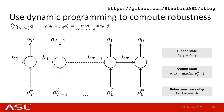We repeat this until we reach the end of the robustness trace. Essentially, we are performing dynamic programming because the hidden state h is keeping track of the maximum robustness value seen so far. By the end of the signal, o will output the maximum robustness value of phi, which corresponds to the robustness value of eventually phi. When we collect all the outputs together, this is actually the robustness trace of eventually phi, which can then be passed on to the next STL operation.